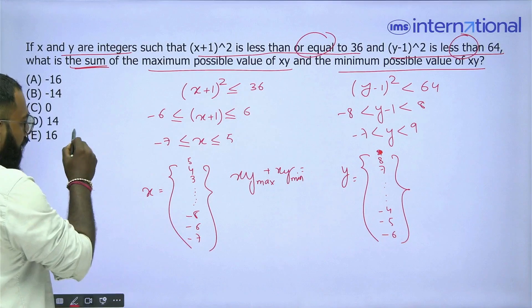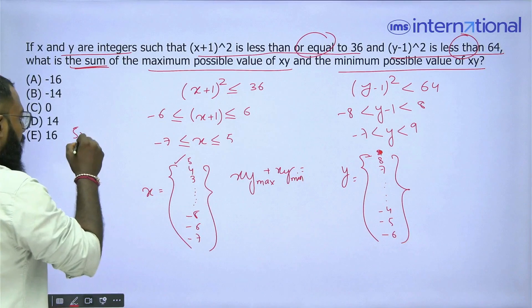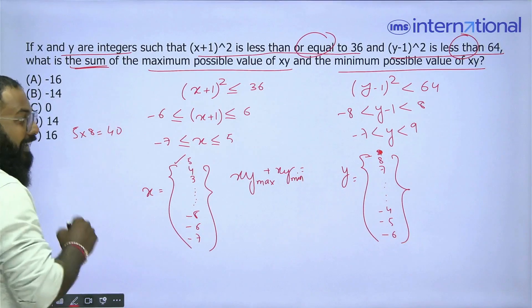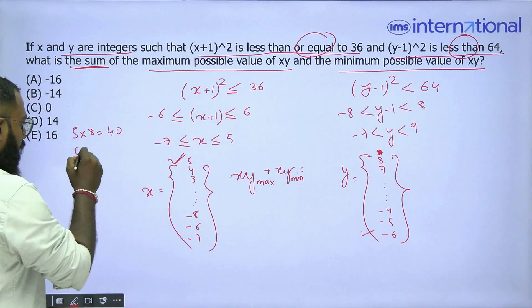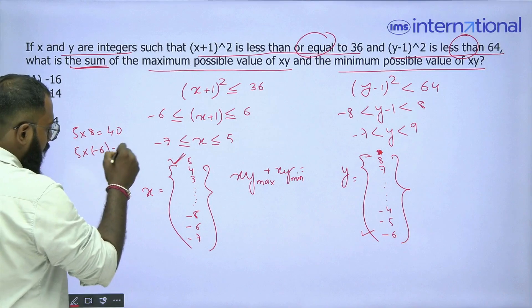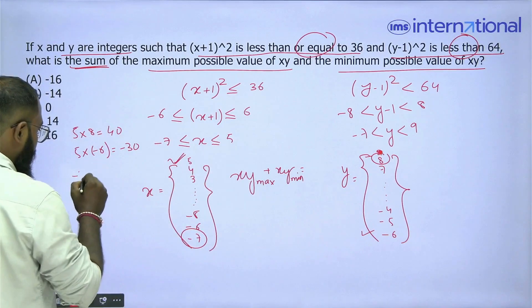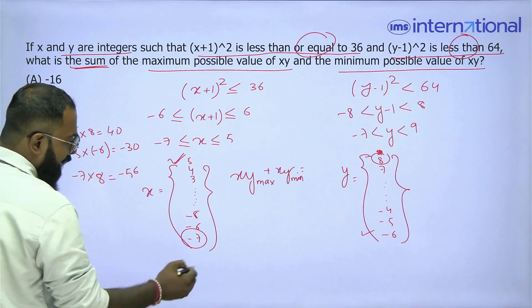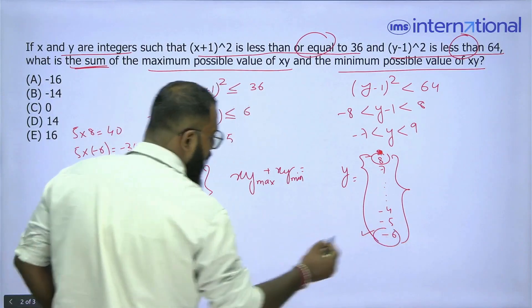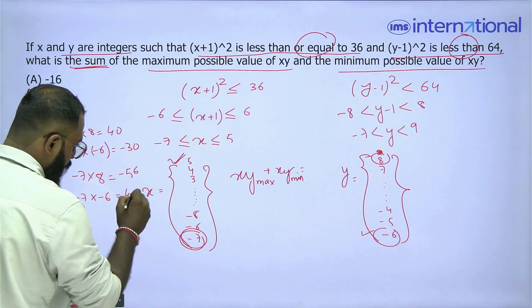So one pair of extremes is 5 and 8, that is 40. Another pair of extremes is 5 and -6, that is -30. Then -7 and 8, that is -56. And -7 and -6, that is 42.